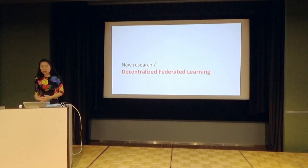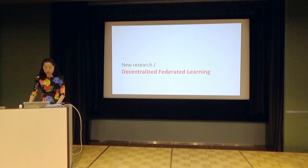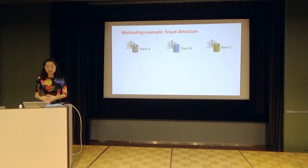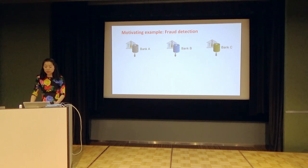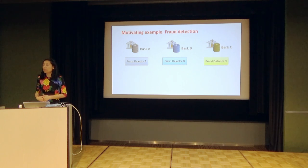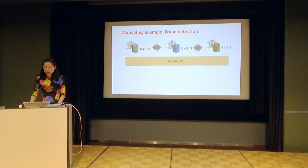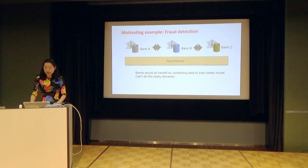Today I'll talk about some new research that we have done at Berkeley and also Oasis with decentralized federated learning. Let's look at a motivating example in fraud detection. When banks provide financial services, for example giving out loans, they need to detect fraud. Typically, each bank uses its own data to build a machine learning model for fraud detection. However, it would be much better if these banks could actually share data to build one fraud detection model instead of individual ones, because with more data the machine learning model can be more effective.